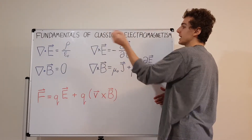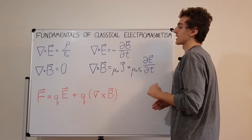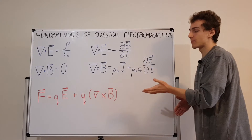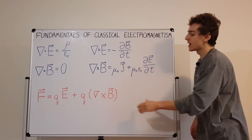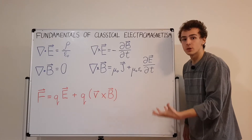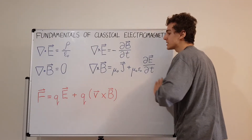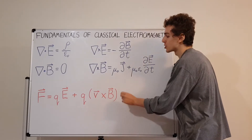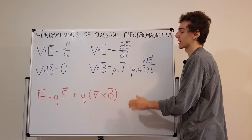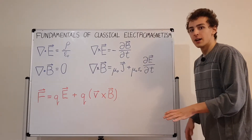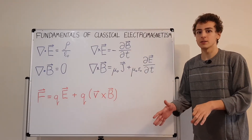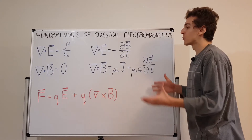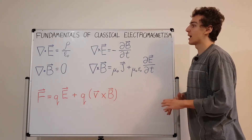What is E? E is the electric field. What is B? B is the magnetic field. So this tells us how electric fields and magnetic fields behave. The red equation down here is the Lorentz force equation, sometimes called the electromagnetic force equation, and it tells you how charges respond to electric and magnetic fields. This is the fundamental understanding of how electromagnetism works.